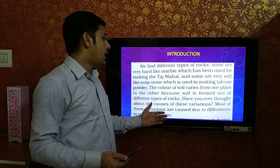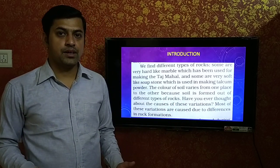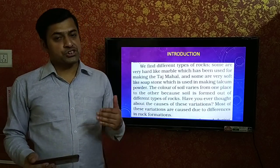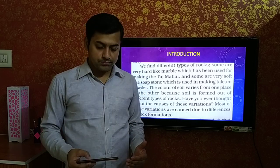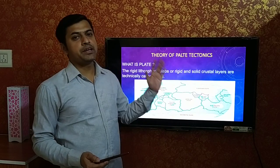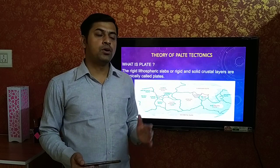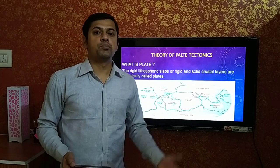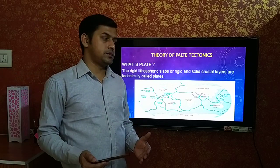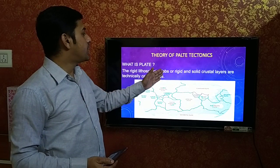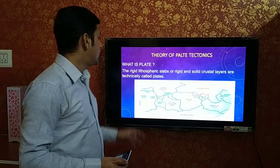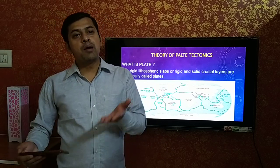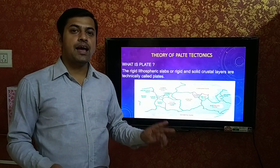The main reason for this variation is due to the different formation of rocks. As rocks are found from different sources and formed in different ways, the color, structure, everything varies. Now, an important thing is plate tectonic theory. This plate tectonic theory is an important part of this chapter, because nothing can be discussed apart from plate tectonic theory. Whatever the formation of landforms on the earth, all are due to plate movements. A plate is the rigid lithospheric slab — rigid and solid crustal layers are technically called plates. There are two types of plates: oceanic plates and continental plates.